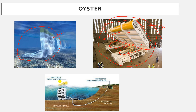So the Oyster moves back and forth due to the effect of the waves. The two parts of the rigid flap are connected to two pistons, which produce pressurized water that flows through a pipeline to a hydroelectric power station, converting this high-pressure water into electrical power.